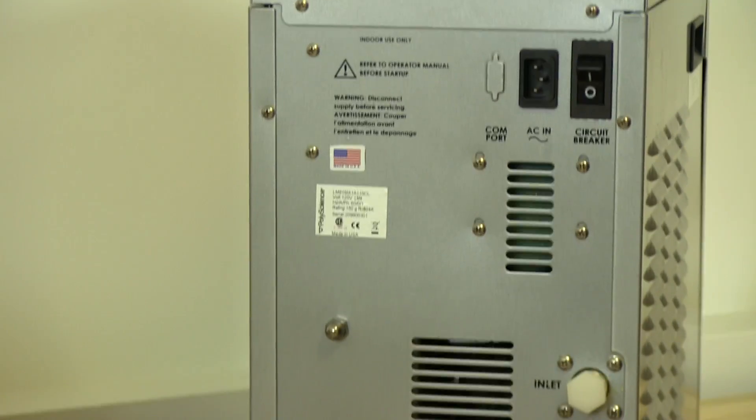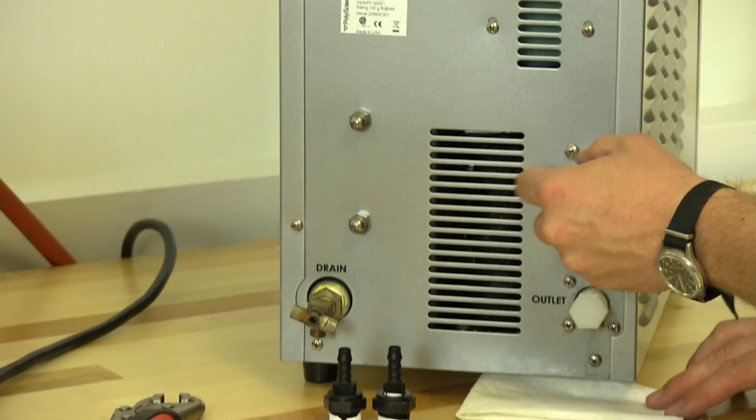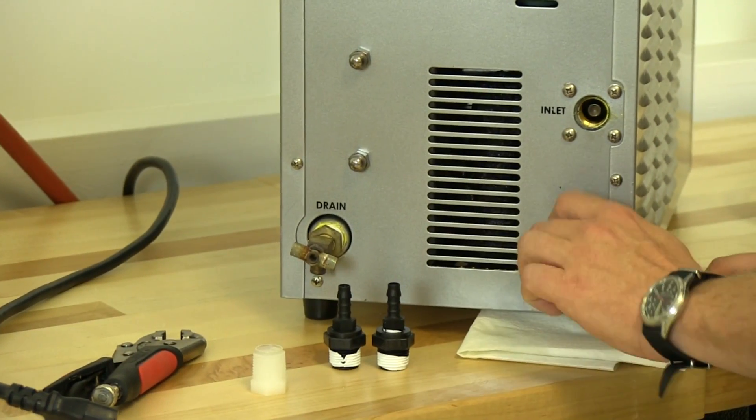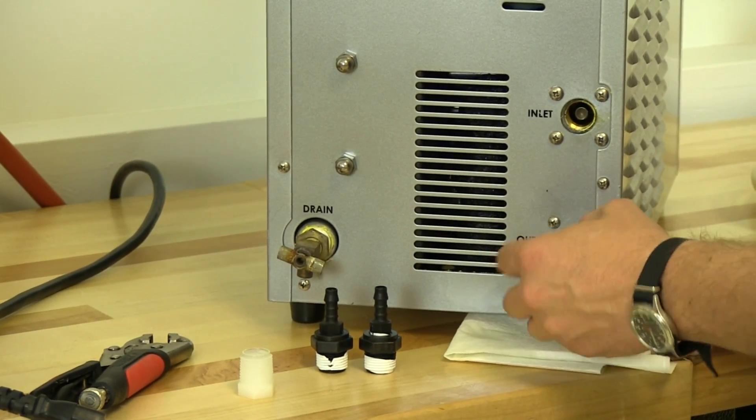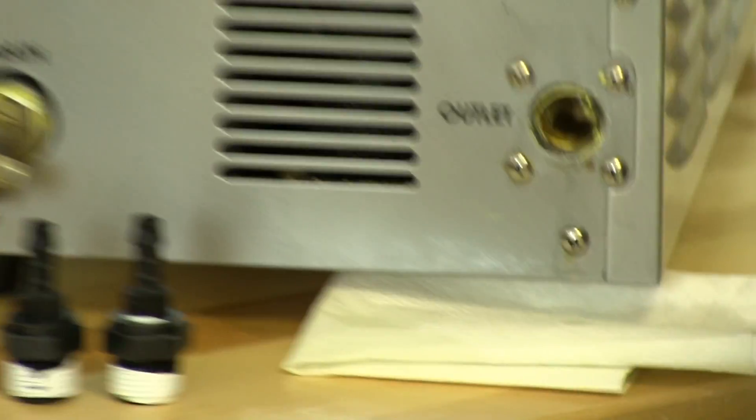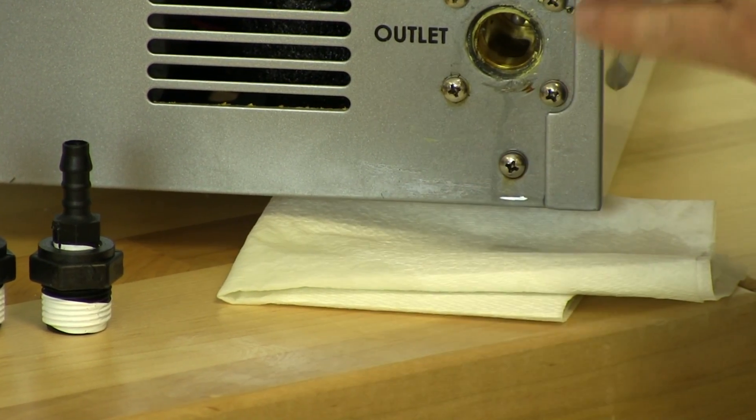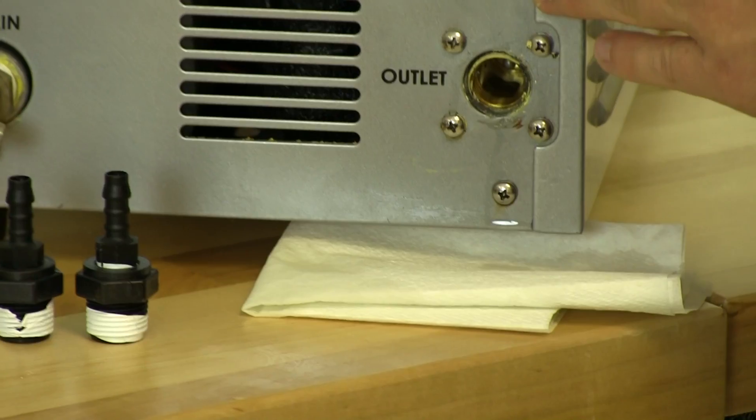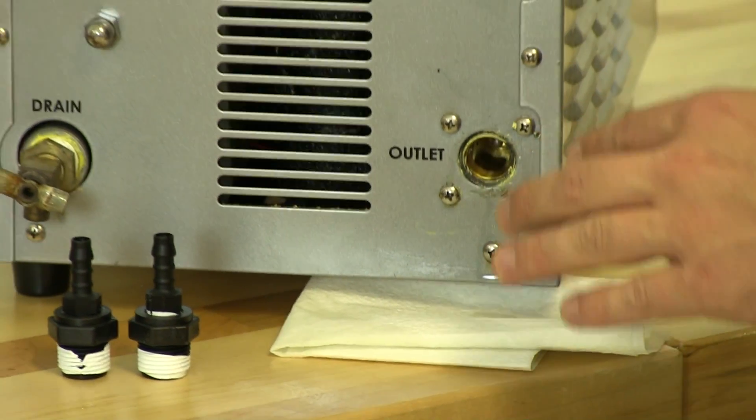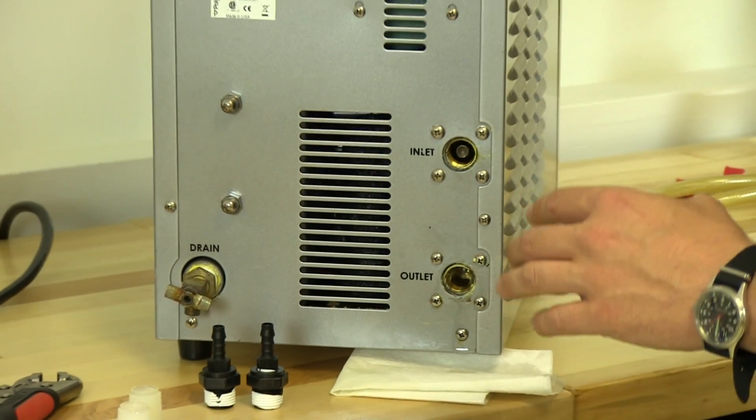I have a paper towel because when we remove these inlet and outlet plugs, nothing will come out of the inlet, but occasionally a small amount of propylene glycol mix will come out of the outlet. This is actually on purpose. They are tested in the factory, and before they ship, we drain them but leave a small amount in there to protect them during shipping.